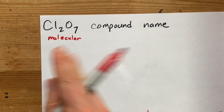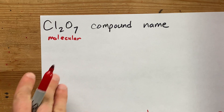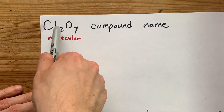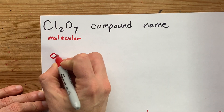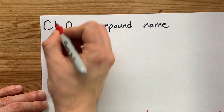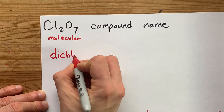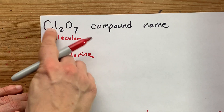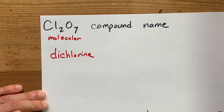That means you're going to need to use prefixes to tell people how many of each atom there are. Two chlorines means you use the prefix 'di' for two, and then you put the element name of the first element listed here — chlorine — as is.